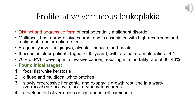The third major entity under WHO's potentially malignant disorders is proliferative verrucous leukoplakia — defined as a distinct and aggressive form of oral potentially malignant disorder. It is typically multifocal, has a progressive course, and carries high recurrence and malignant transformation rates to squamous cell carcinoma. PVL usually involves the gingiva, alveolar mucosa, and palate; the lateral and ventral surfaces of the tongue and floor of mouth are rarely involved in early stages.